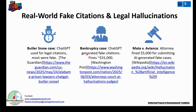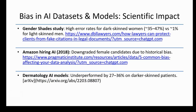We have also witnessed a lot of bias in high-profile datasets and models. Examples from Gender Shades studies showed high error rates for dark-skinned women versus light-skinned men. In Amazon's hiring AI in 2018, female candidates were downgraded due to historical bias in the training data.